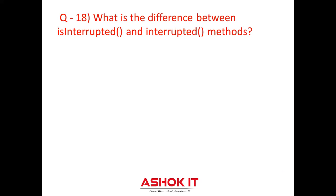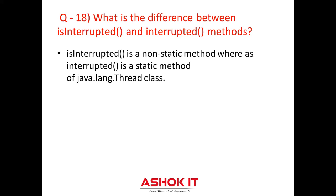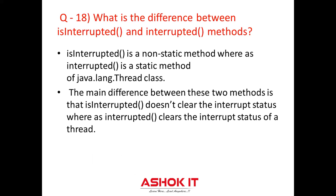Question eighteen: What is the difference between the interrupted and isInterrupted methods? Both isInterrupted and interrupted methods are used to check whether a particular thread is interrupted or not, and both return the current interrupt status of a thread. isInterrupted is a non-static method, where interrupted is a static method. The main difference is that isInterrupted does not clear the interrupt status, whereas the interrupted method clears the interrupt status.